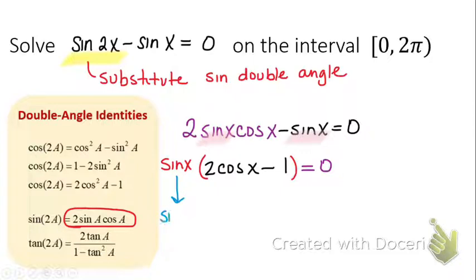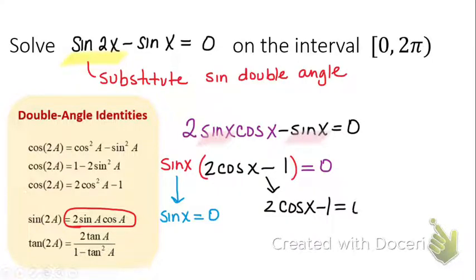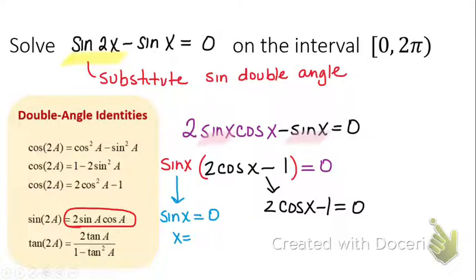Here's the first equation: sine x equals 0. Here's the second equation: 2 cosine x minus 1 equals 0. Take a minute and solve both of those equations for x. For the first equation, take the inverse sine of both sides, so x equals the inverse sine of 0.